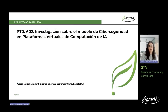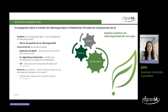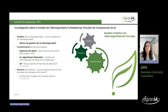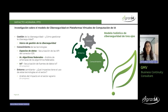Voy a explicar la parte de nuestra actividad, que es la investigación sobre los modelos de ciberseguridad en las plataformas virtuales de computación de IA. Hemos propuesto hacer una investigación a través de un modelo holístico, ya que la ciberseguridad es un campo muy complejo que abarca muchos tipos de tecnologías y procesos en constante cambio. Este enfoque holístico nos permite evaluar la seguridad desde múltiples perspectivas. Los ejes que hemos utilizado son la gestión de la ciberseguridad, el conocimiento de las tecnologías concretas y el entorno del sector.